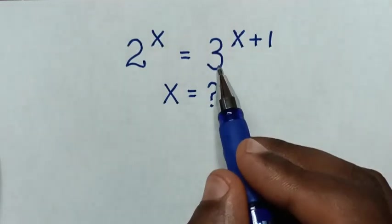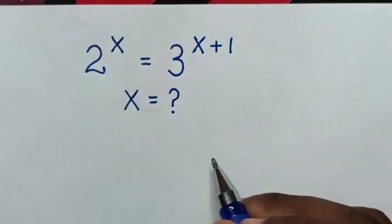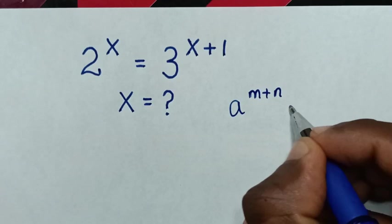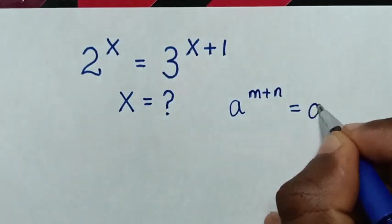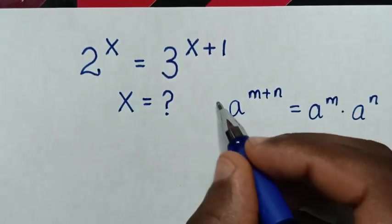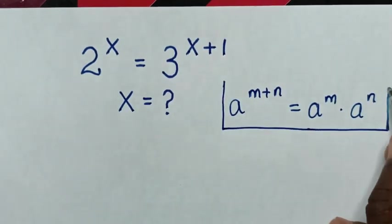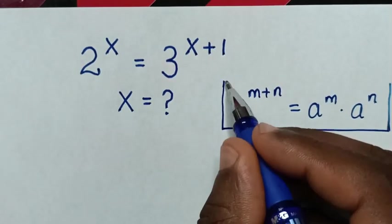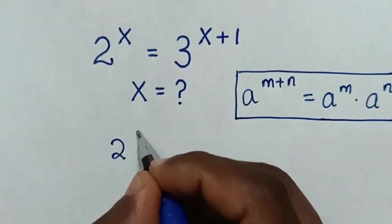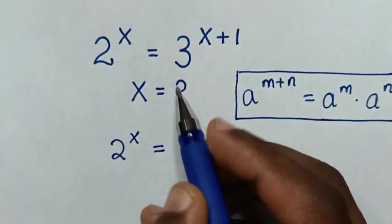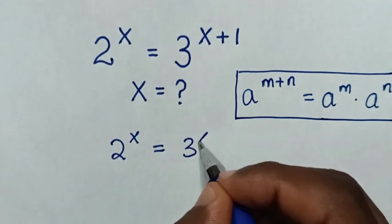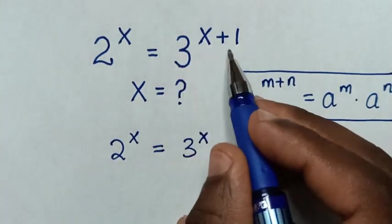So first, from 3 power of x plus 1, we'll apply this exponential rule: a power of m plus n is equal to a power of m times a power of n. So our equation will be 2 power of x is equal to 3 power of x, then times 3 power of 1.